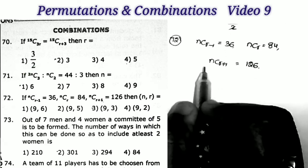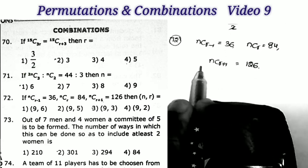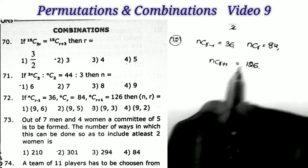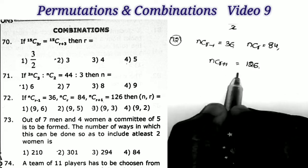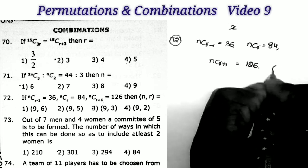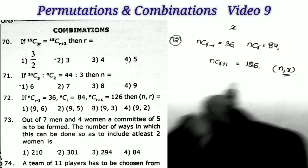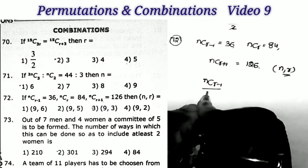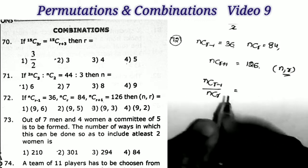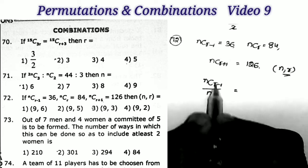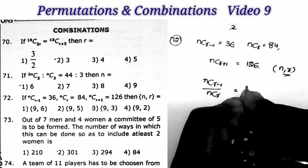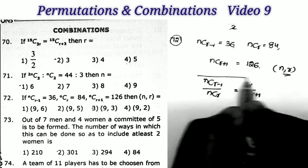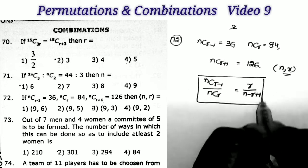Next question, sum number 72: given nC(R-1) = 36, nCR = 84, nC(R+1) = 126 — find the values of N and R. We apply the formula: nC(R-1) / nCR = R / (N − R + 1). Taking the division nC(R-1) / nCR = 36/84, and applying the formula, R / (N − R + 1) = 3/7.